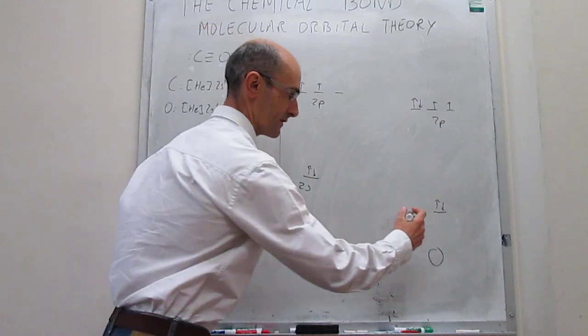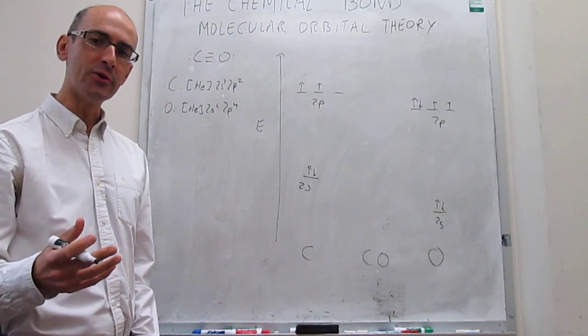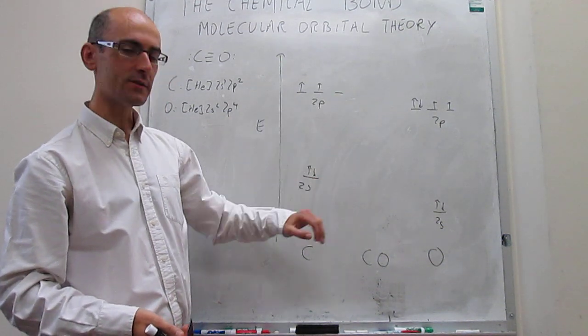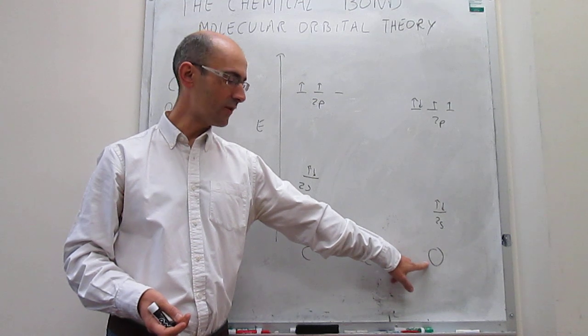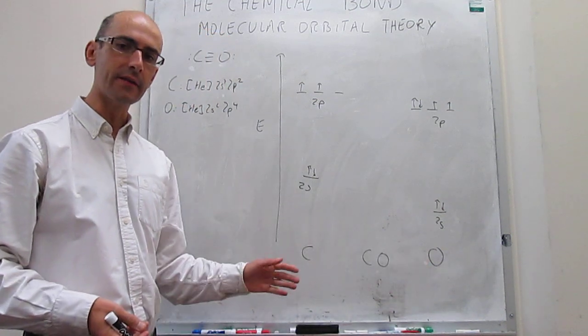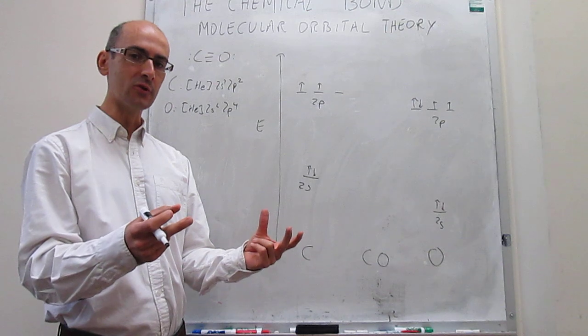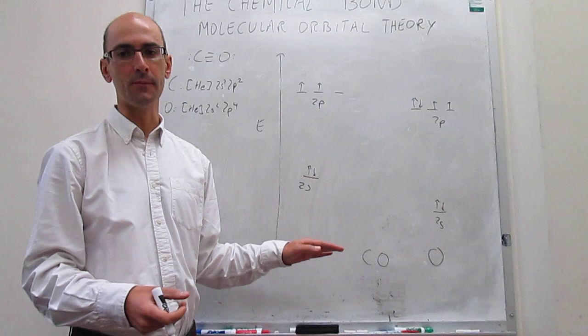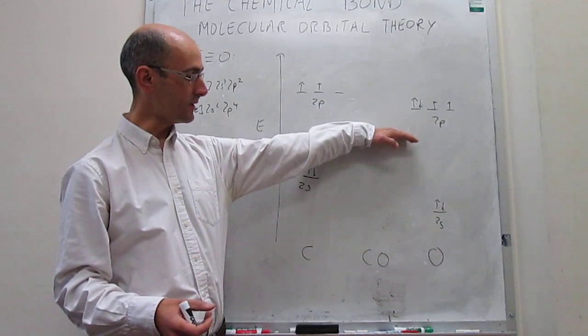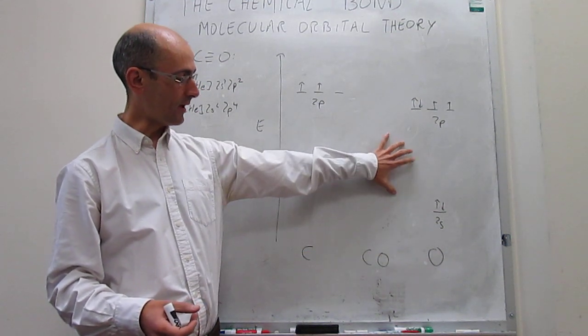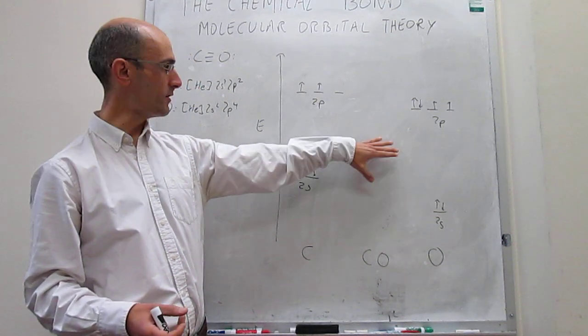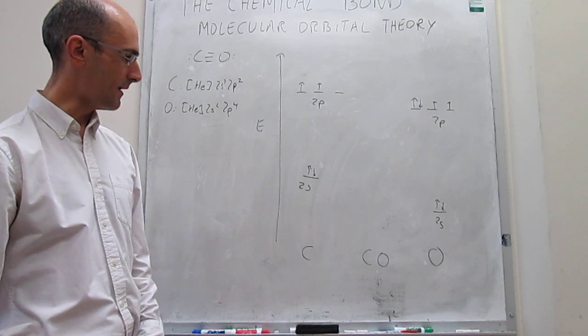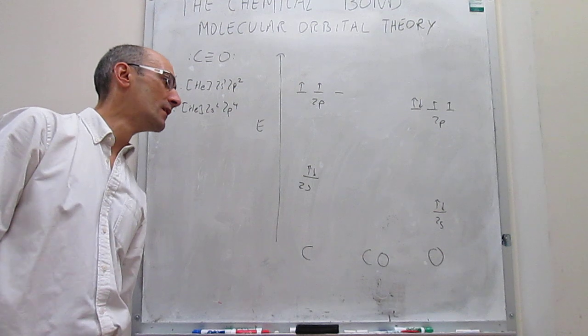The first difference that you see here when you consider a heteronuclear diatomic molecule is that the energy levels of the separated atoms are actually different. The nuclear charge in oxygen is higher than in carbon, so those electrons are actually more tightly held to the nucleus in the case of oxygen than carbon, and that stabilizes the orbitals, which means that the energy of the oxygen orbitals is offset, lowering energy with respect to the carbon orbitals.